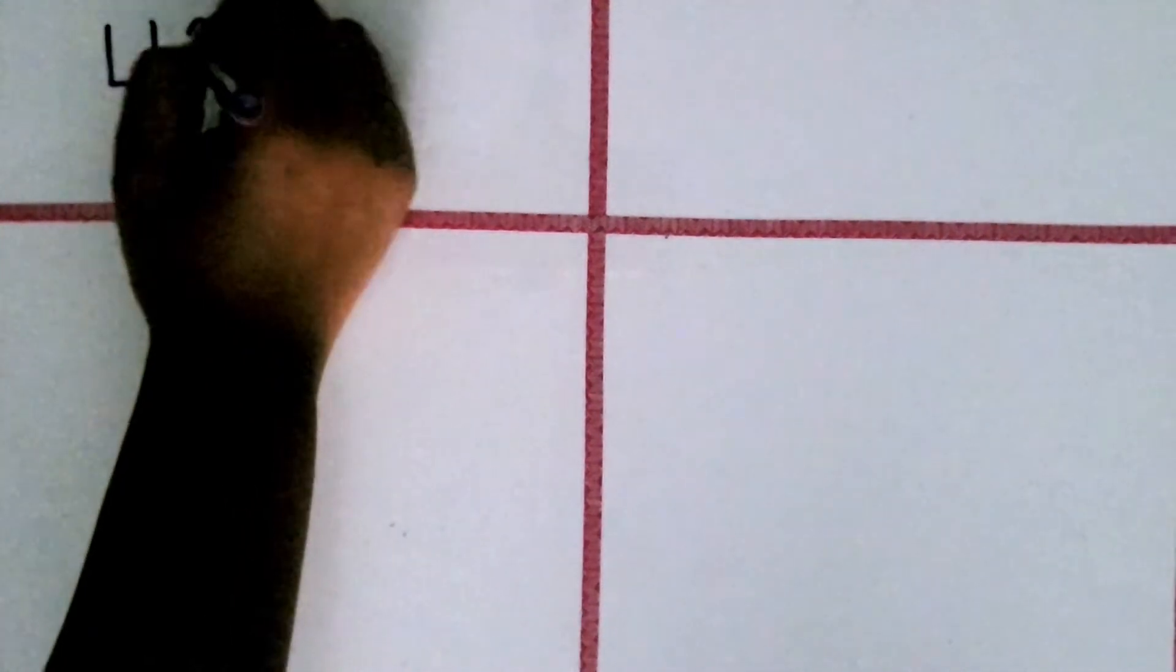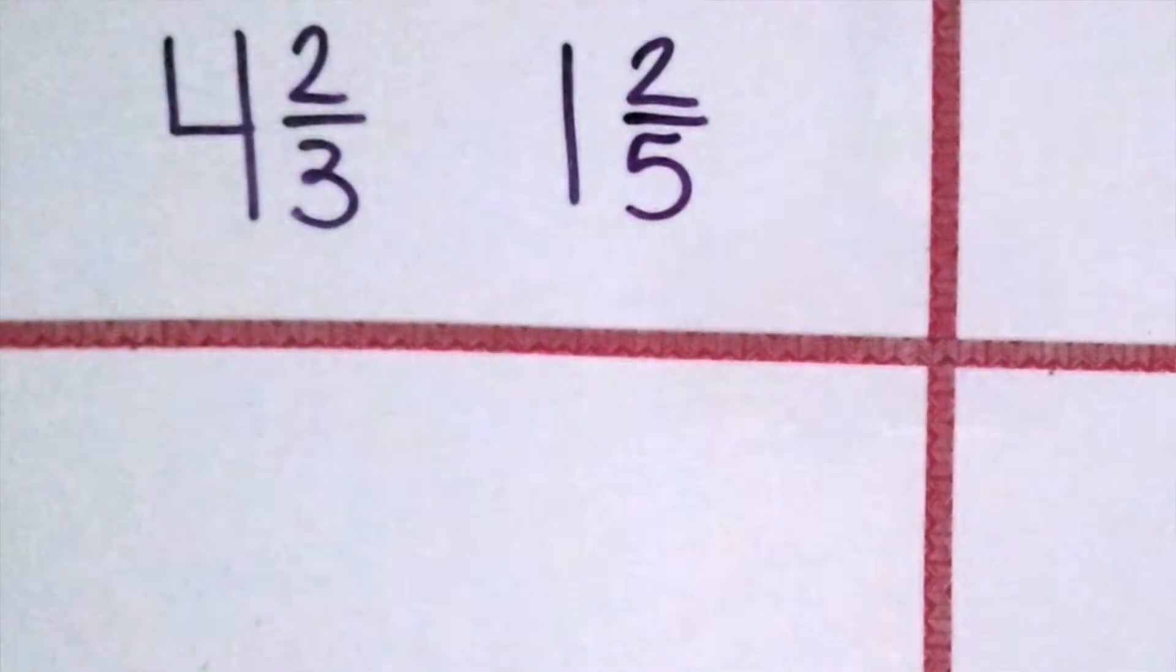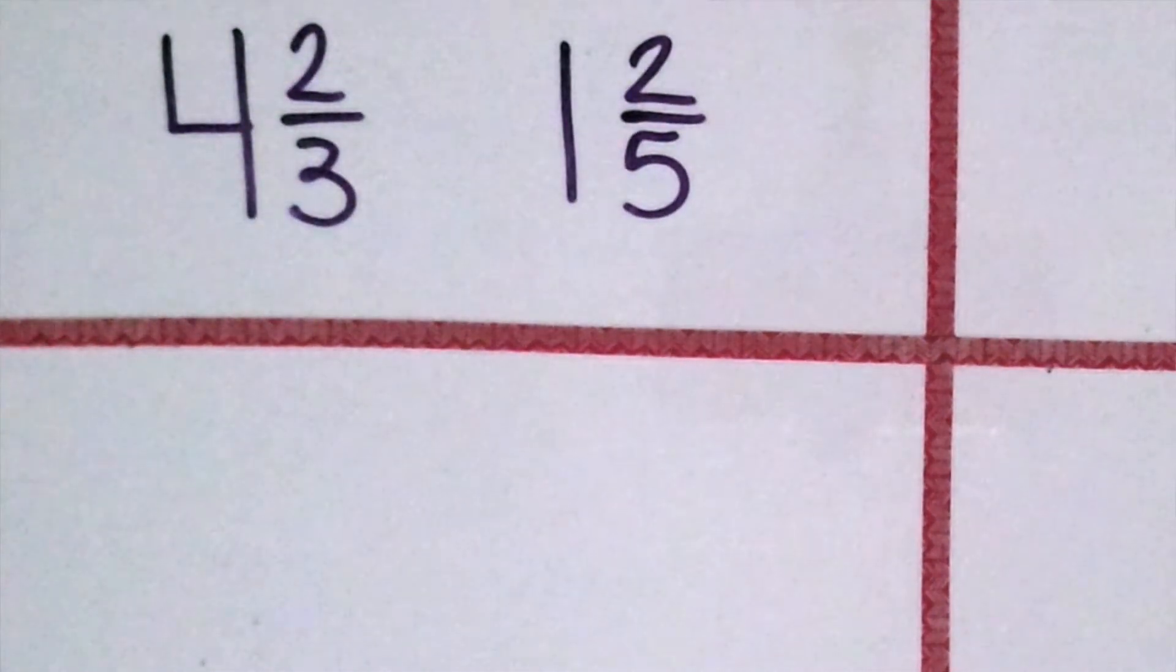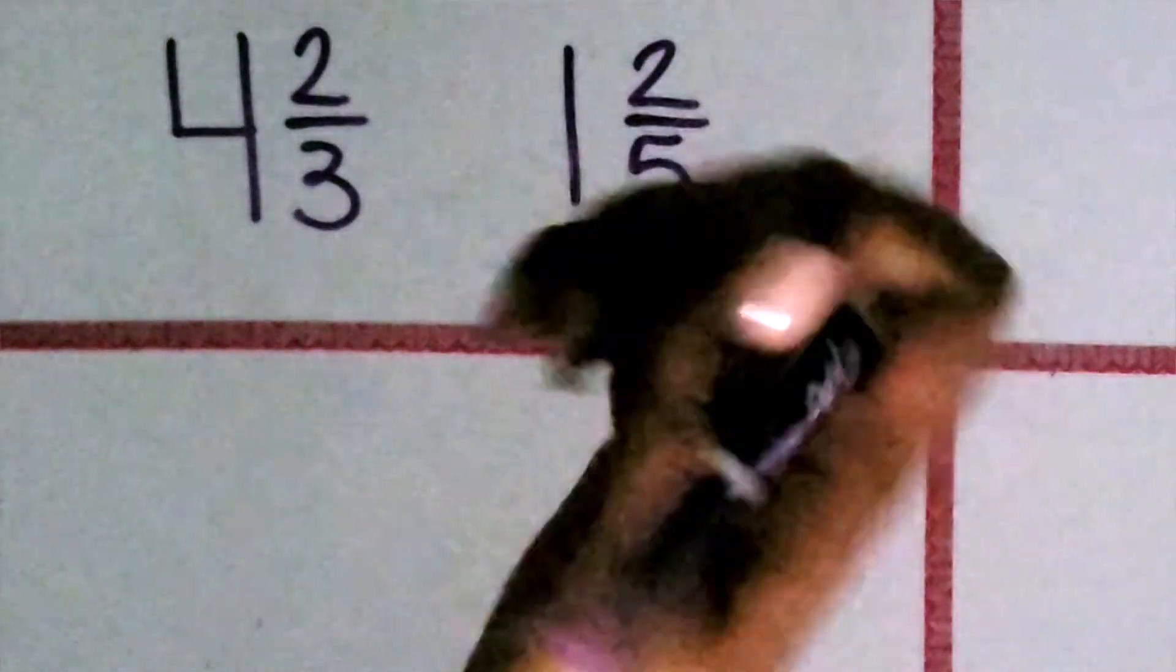In the word problem, Fred's big dog eats 4 2/3 bags of food each month and the small dog eats 1 2/5 bags of food each month. We need to find out how much food both dogs eat total each month. So we're going to join these two amounts together.